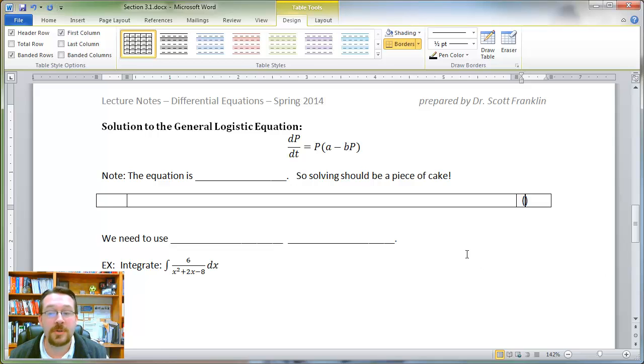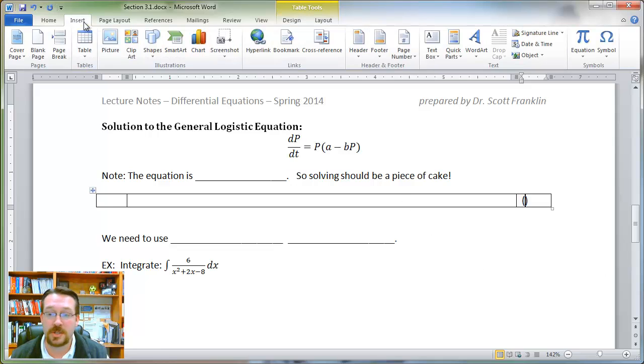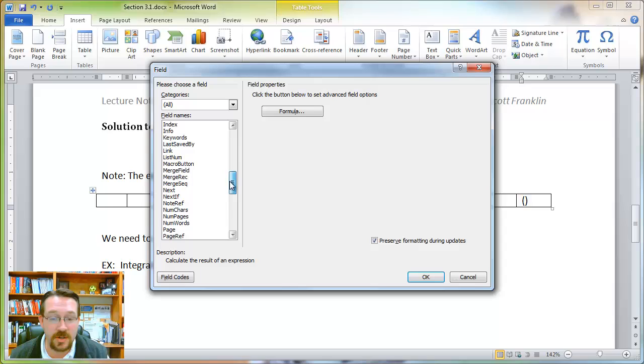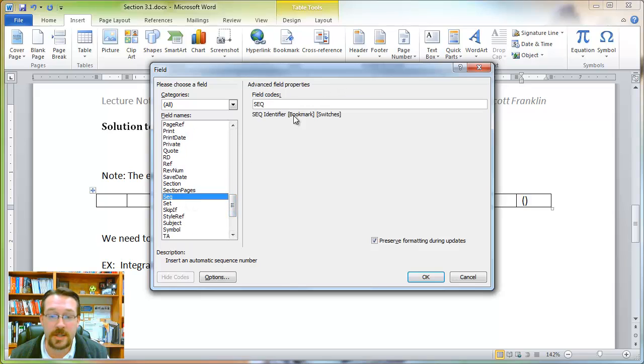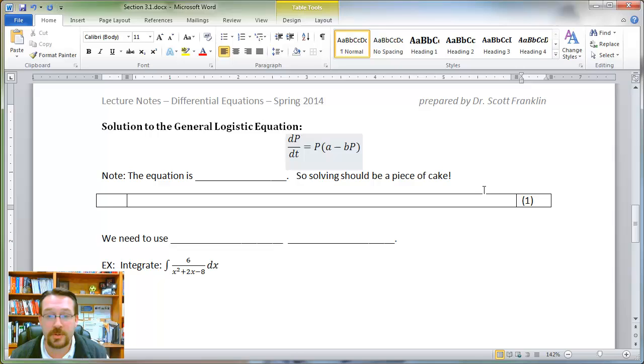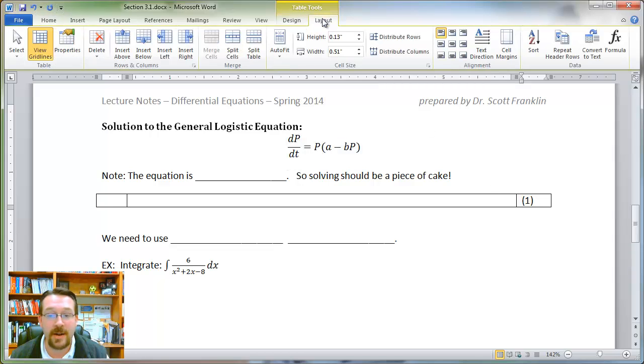So for simple equation numbers, all I've got to do is go under Insert. I'm going to go to Quick Parts, and I'm going to insert a field, and I want to use the Sequence field, and I'm going to call it Sequence EQ, and it inserts that right there. I will want this particular cell, so under Layout, I want it to be centered vertically and right justified.